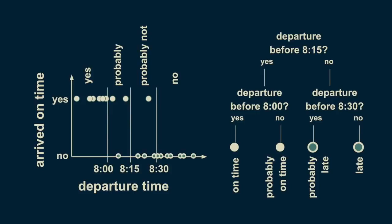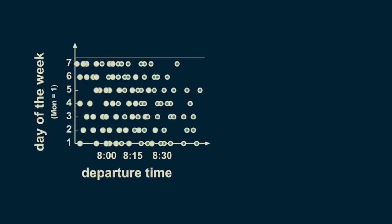We can extend this example to the case where there are two predictor variables. Consider both the departure time and the day of the week. We'll start counting at Monday equals 1, so Saturday equals 6 and Sunday equals 7. Inspecting the data, we can see that on Saturday and Sunday — the green filled donuts representing being late — extend further to the left.